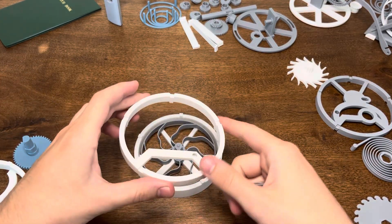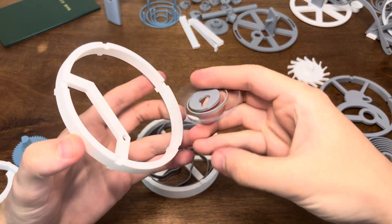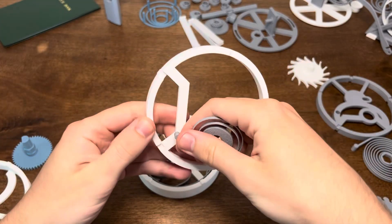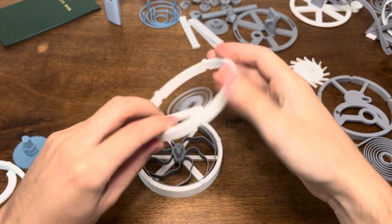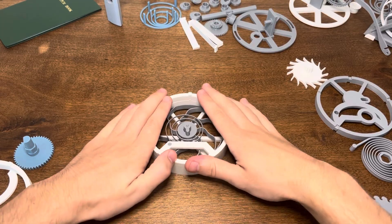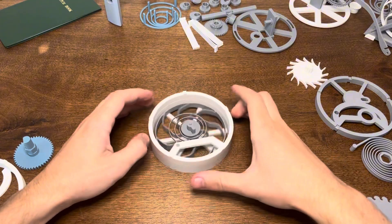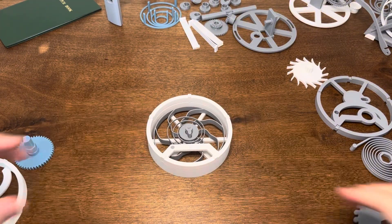As always feel free to download this on my Thangs account and build along with me. So first we're going to be going through the mechanical power box that times everything and keeps a slow release of energy. This is the same as my other builds so if you've seen my other builds feel free to skip this part or follow along if you want to try to rebuild it.